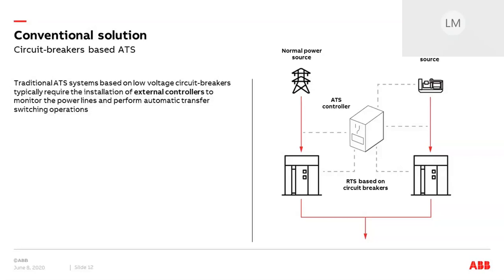Service continuity is playing an increasing role in low-voltage electrical installations, and automatic transfer logics are more and more demanded. Circuit breaker-based ATS solutions are typically used in the main distribution board, where low-voltage circuit breakers are installed as incomers for protection of the main busbar system. Low-voltage circuit breakers and their switch disconnector versions are typically installed with an external controller, like the ABB ATS021 and ATS022, to carry out automatic transfer switching operations.